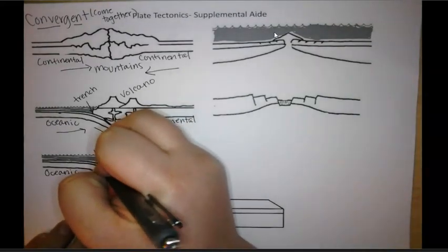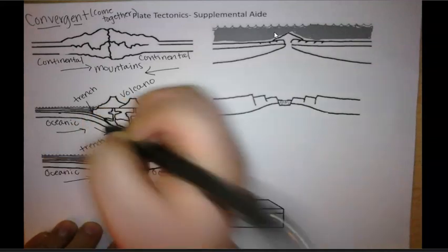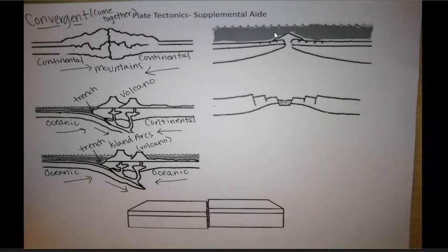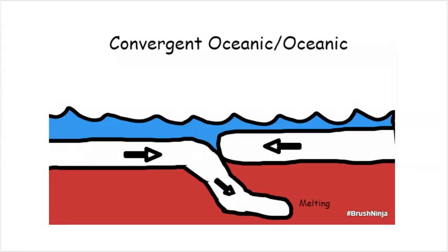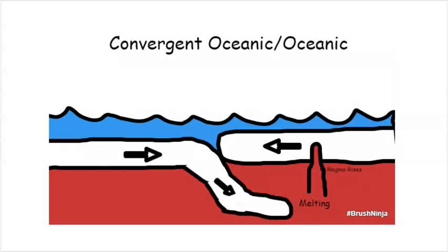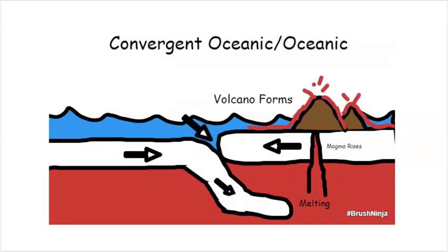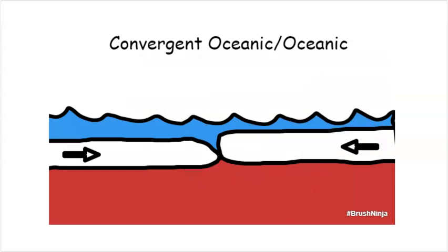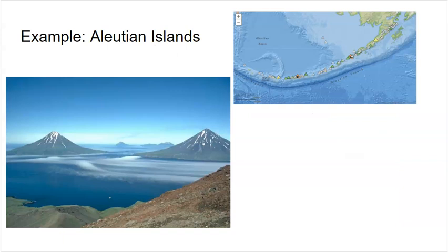Let's look at this a little closer. One crust dives down underneath the other, melting happens because of convection, and the hot magma rises to form those volcanoes. We also have an ocean trench and earthquakes occurring at that area. A common example of this is the Aleutian Islands in Alaska. We can see the two oceanic crusts — one going underneath the other — forming an island arc, along with the Aleutian trench and volcanic islands.